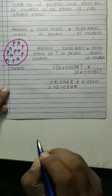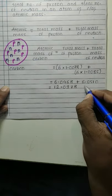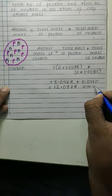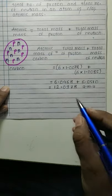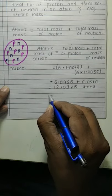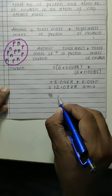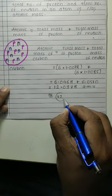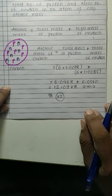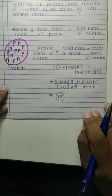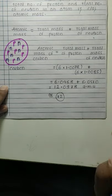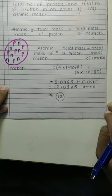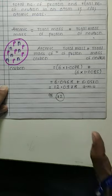Aagaya 12.0978 atomic mass unit. Par aap to jaante hain, 12.0978 decimals mein yeh value yaad rakhna kaafi mushkil hota hai. Isliye decimal ko yaad rakhne ke bajaye, approximately hum atomic mass ki value 12 lete hain. Log kehte hain ki atomic mass number aur atomic mass ek hain — remember, wo ek nahi hain. Atomic mass decimals mein aata hai, uska unit hai atomic mass unit, jabki atomic mass number whole number hota hai, uska koi unit nahi hai.